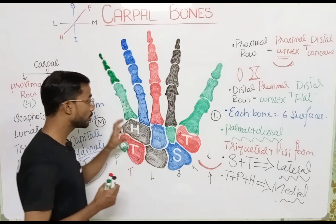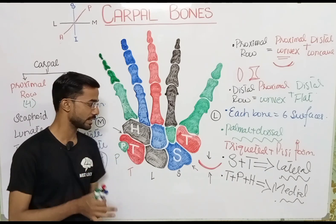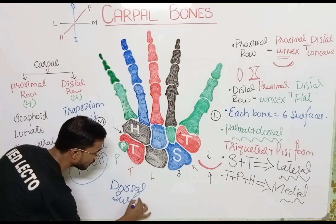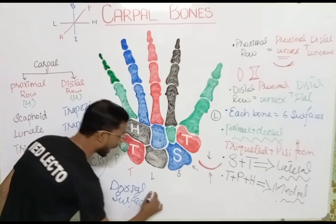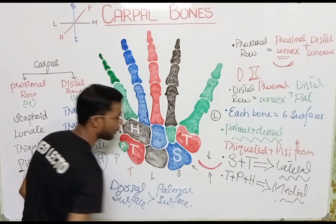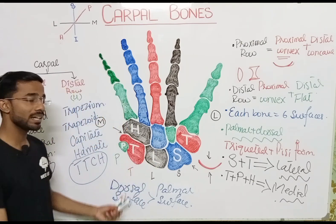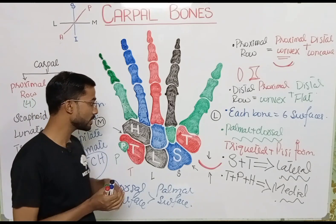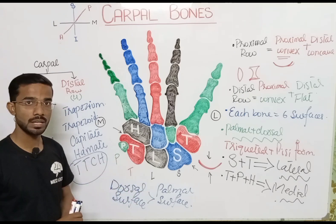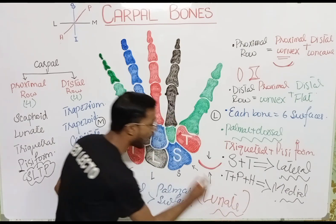The last important point: the dorsal surface of all carpal bones is larger than the palmar surface — except for one bone, which is the lunate. The lunate has a larger palmar surface compared to its dorsal side. So the lunate is an exception, having the opposite relationship to all other carpal bones.